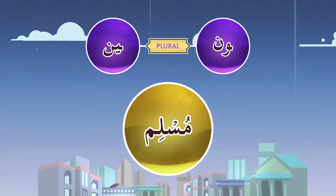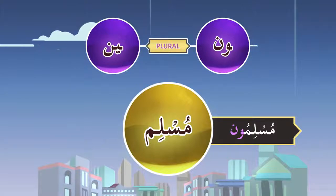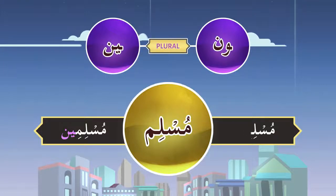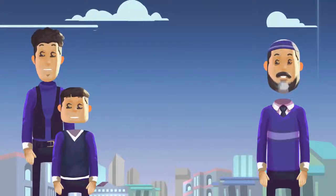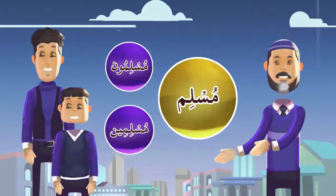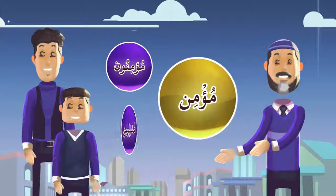The plural of Muslimun is Muslimun, and the plural of Musliman or Muslimin is Muslimin. In brief, if I say the plural of Muslim, you can say it is Muslimun or Muslimin. Muslim — Muslimun, Muslimin.